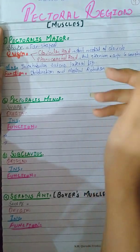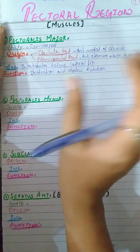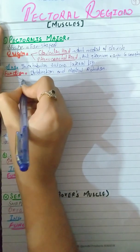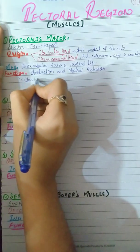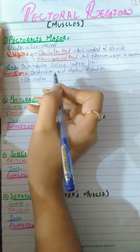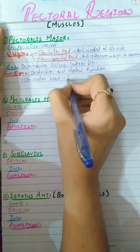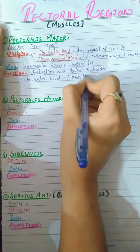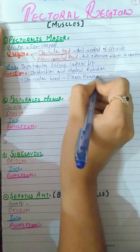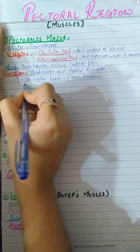The two heads have some different functions. The clavicular head flexes the humerus.